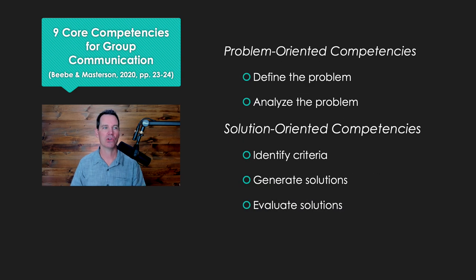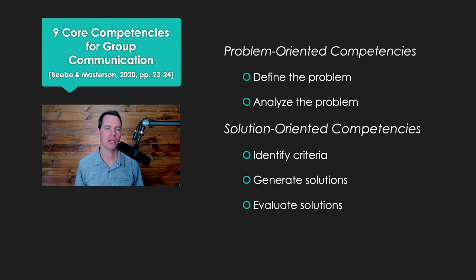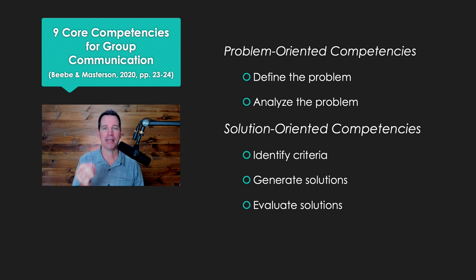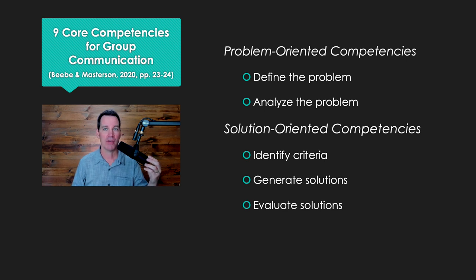Now let's look at the nine core competencies for group communication. These will look familiar if you study groups at all, but even for me there were some interesting things here. The first group of skills is around problem solving — you have to have problem-oriented competency. You need to be able to identify and define problems clearly that the group is working on, and then secondly, analyze that problem, pick it apart, and see it for what it is. If you can wrap your head around the kinds of problems the group is facing, you will be seen as a competent group member.